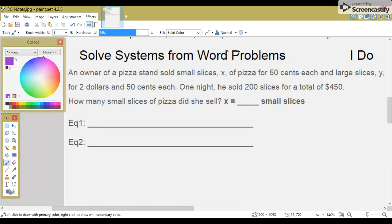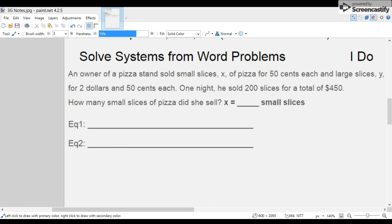Solve systems from word problems. An owner of a pizza stand sold small slices, X, of pizza for $0.50 each, and large slices, Y, for $2.50 each. One night, he sold 200 slices for a total of $450. How many small slices of pizza did she sell?